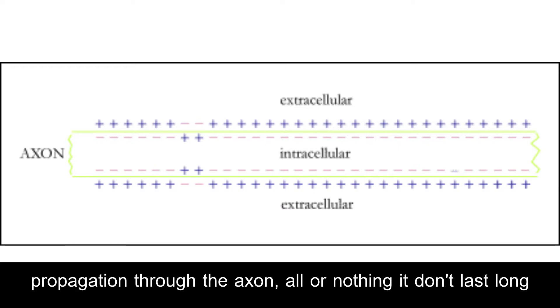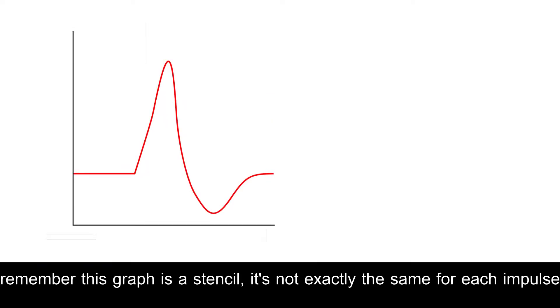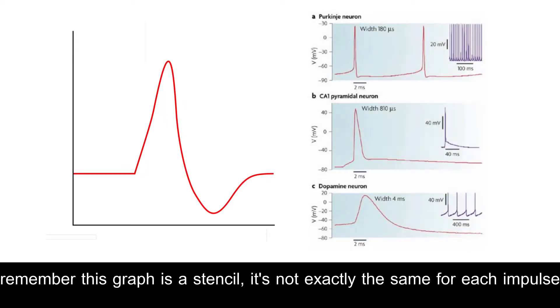Propagation through the axon, all or nothing, it'll last long. Sodium and then potassium out, and the globular proteins go back on. Remember this graph is a stencil, it's not exactly the same for each impulse, they just resemble it.